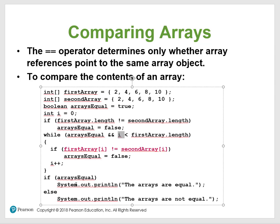On each iteration, if elements don't match, it flags arrayEqual as false. This will compare all array elements — it's a great algorithm to see what's going on with array comparison.